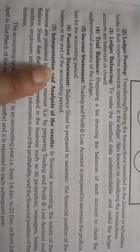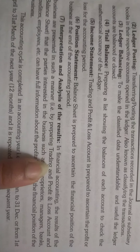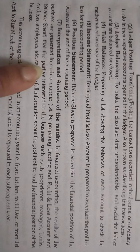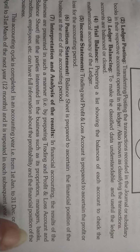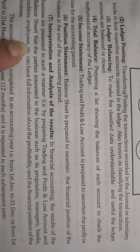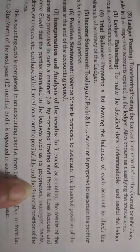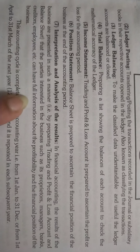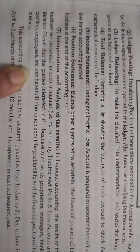The 7th step is interpretation and analysis of the results. In financial accounting, the results of the business are presented in such a manner that the parties interested in the business — such as its proprietors, managers, banks, creditors, and employees — can have full information about the profitability and the financial position of the business.